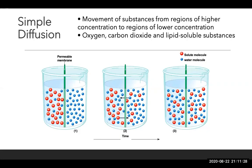In simple diffusion, it's the movement of substances from regions of higher concentration to regions of lower concentration. The easiest way to describe this is if you spray a little bit of perfume into a room, after a while you'll smell the perfume in the farthest corner of the room because that initial spray had the highest concentration, and then the perfume will simply diffuse to every corner of that room. This is how oxygen, carbon dioxide, and any lipid-soluble substances move across your cells.